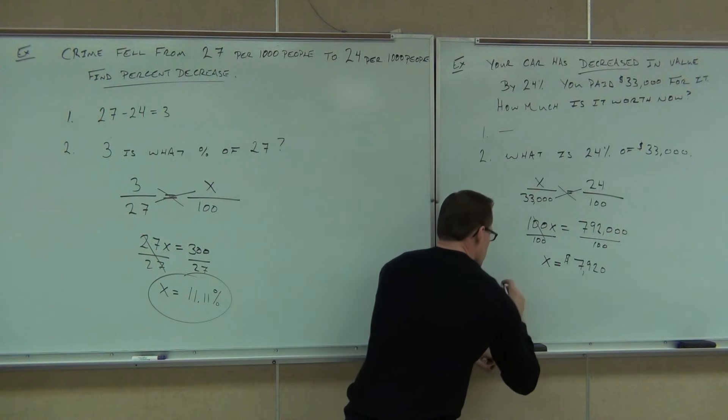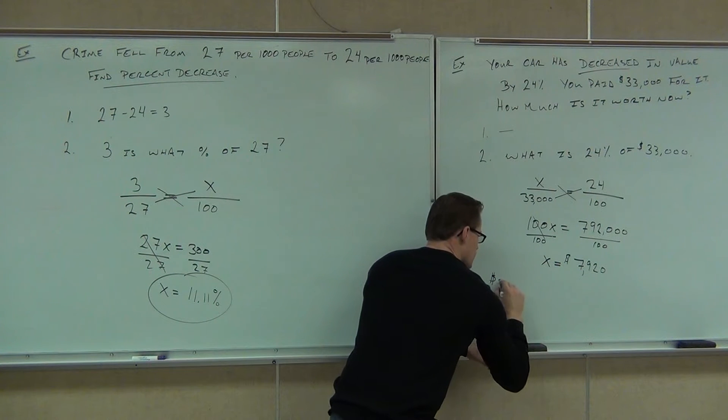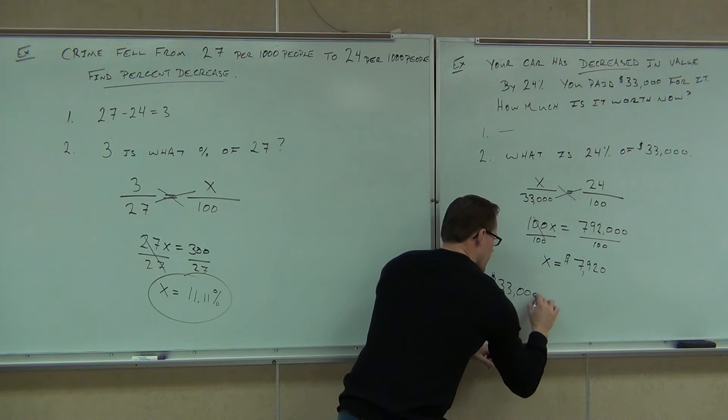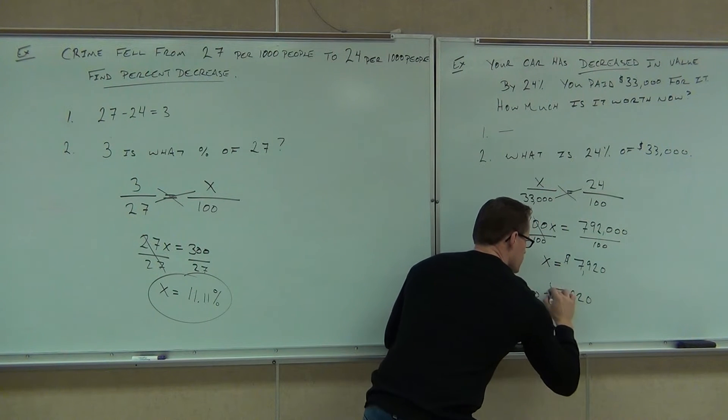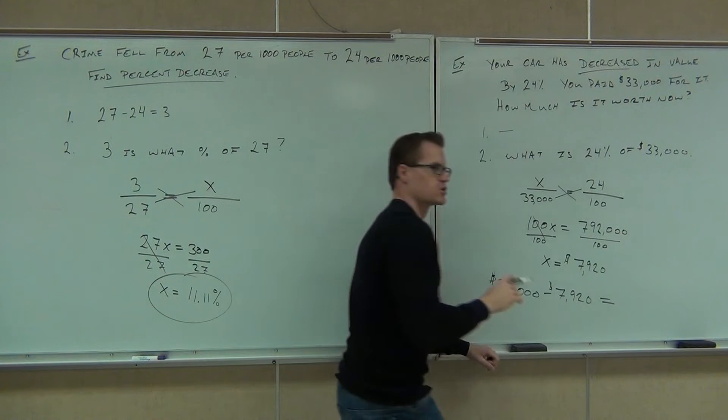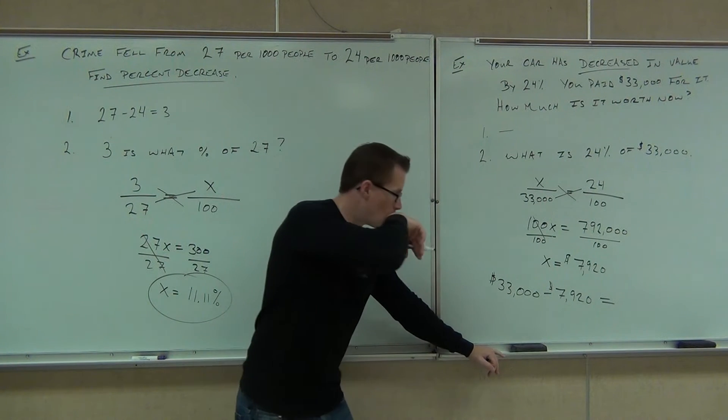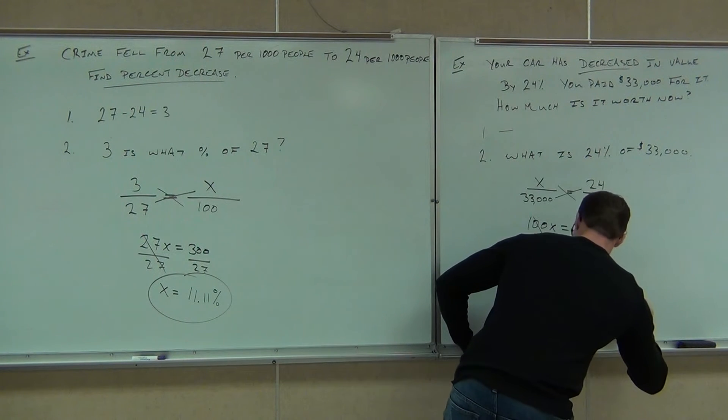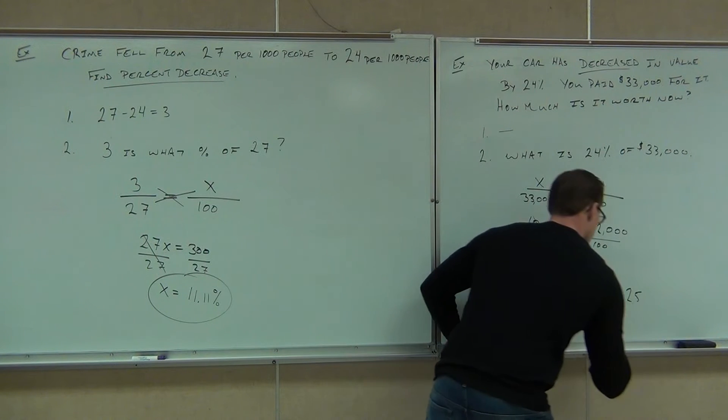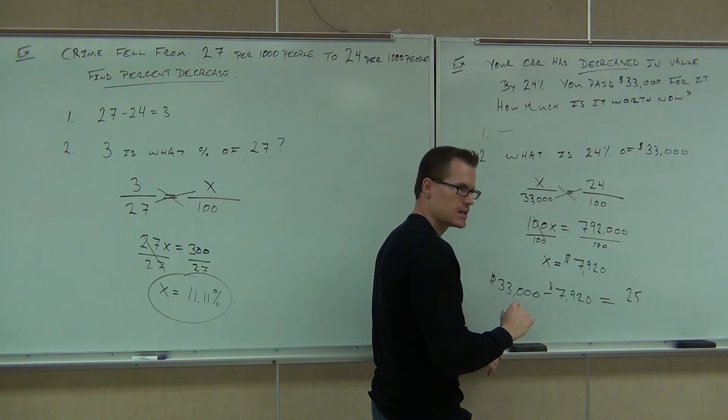So to find out the actual value, you'll take your $33,000. You'll subtract off your $7,920. And this is going to give you how much your truck is worth now. How much is it worth now? $25,080. $25,080? Yeah.